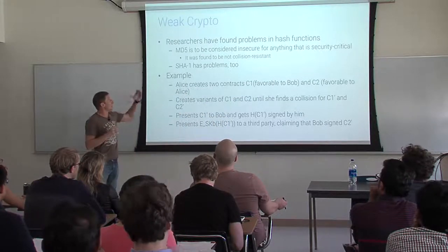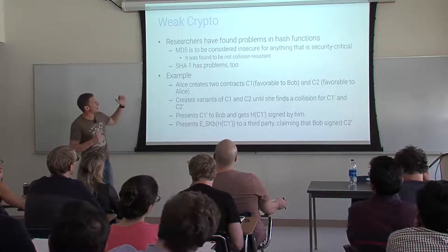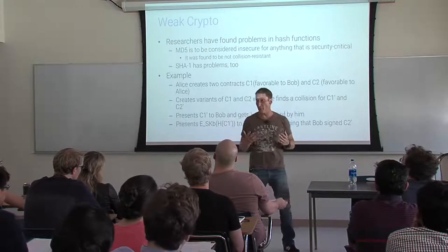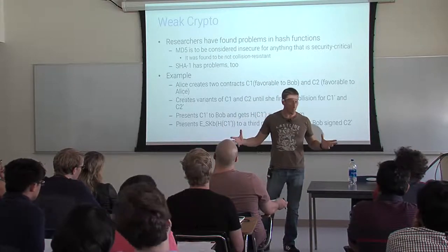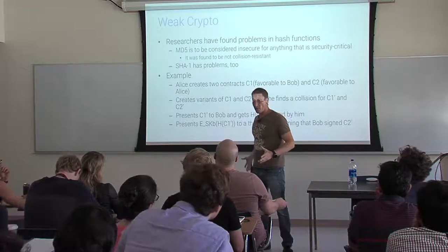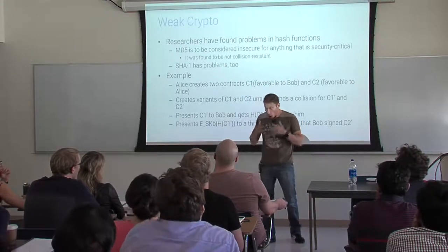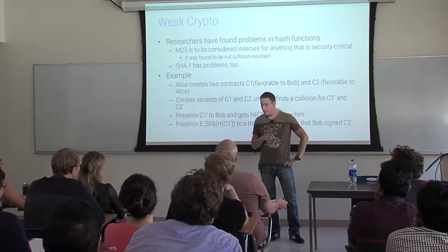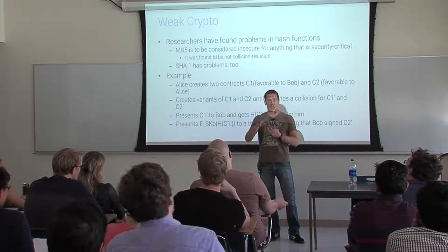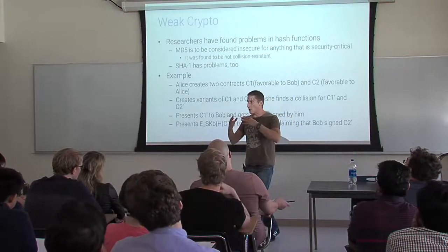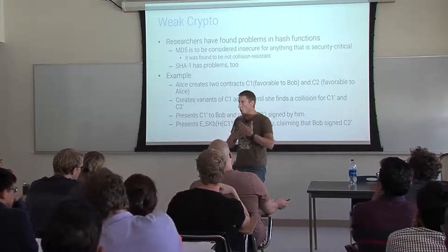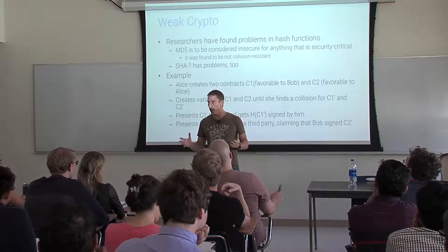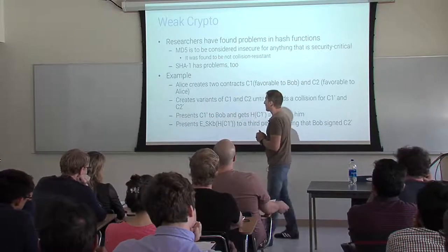There are problems — for example, MD5 is not collision resistant. It was considered a great hash function for a while, but then the cryptographer community found issues. People like Rachel and Stefano in our department look at these algorithms and find problems. They found a collision that proves there is a problem. Why is a weak hash function a problem?